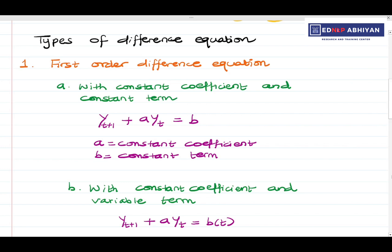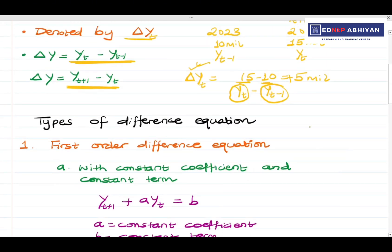If we have a two unit time gap — for example, 2023, 2024, and 2025 — then 2023 is yt, 2024 is yt+1, and 2025 is yt+2. We have two time period gaps, and that becomes a second order difference equation. When we have a larger time gap, we have a higher order.